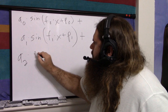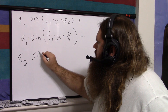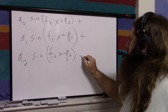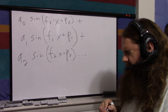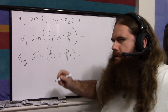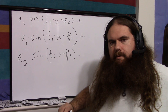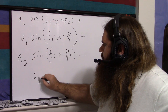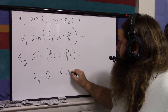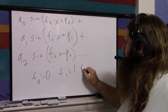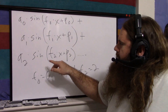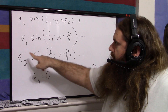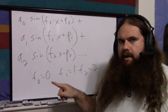Plus a2 times sine of (f2 times x plus p2), and it's the same thing. The frequencies are actually set for the normal Fourier series just to keep things nice and simple: f0 equals 0, f1 equals 1, f2 equals 2. So your actual parameters are the amplitudes of the waves and the phases of the waves.